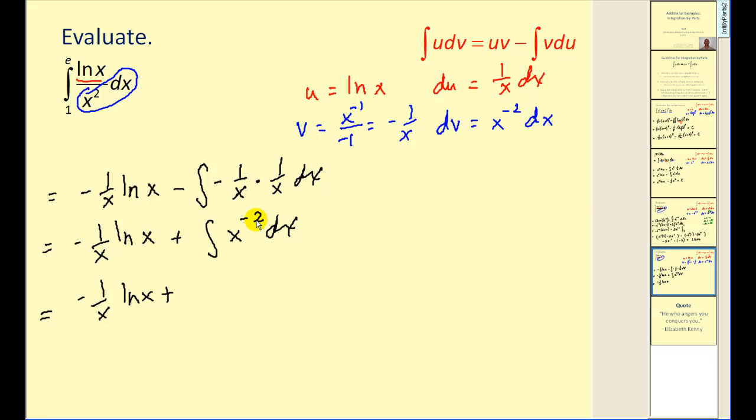This would be x to the power of negative 2 dx. Applying the power rule here, we'd have x to the negative 1 divided by negative 1. Which would give us a minus 1 over x. Again, evaluate it at e and 1. Remember that natural log e is equal to 1 and natural log 1 is equal to 0.